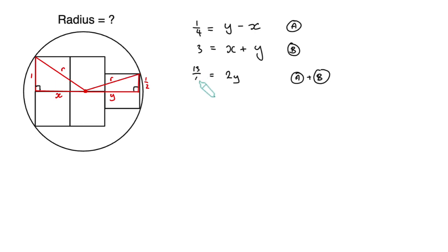Now three and a quarter is 13 over 4, so we can write two y equals 13 over 4, and y equals 13 over 8.